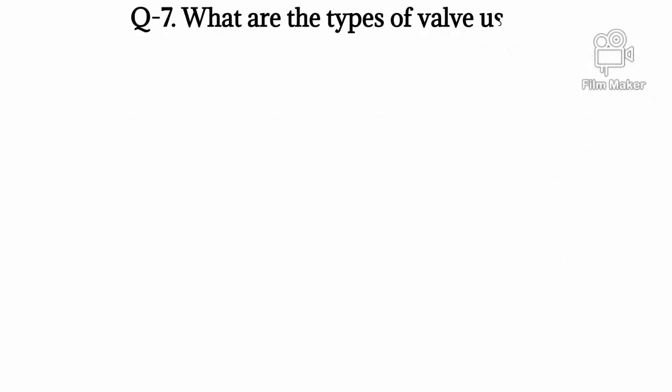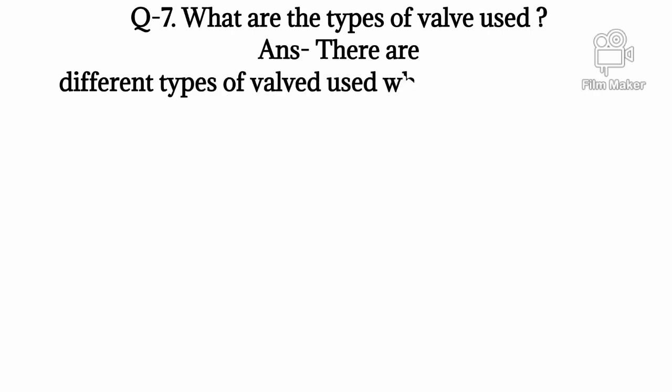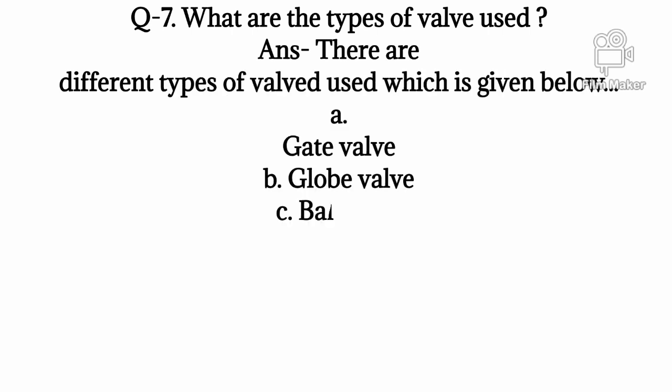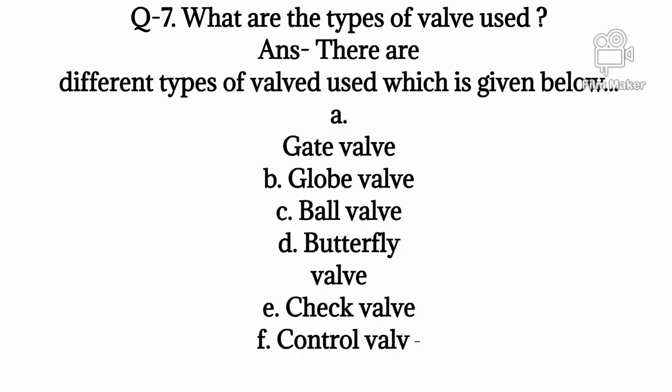Q7: What are the types of valve used? Answer: There are different types of valve used which is given below. A: Gate valve, B: Globe valve, C: Ball valve, D: Butterfly valve, E: Check valve, F: Control valve, G: Needle valve.